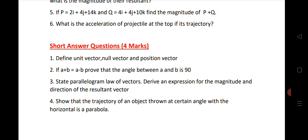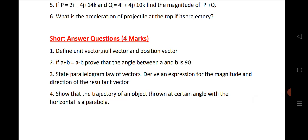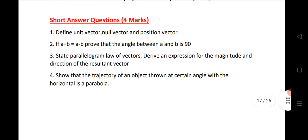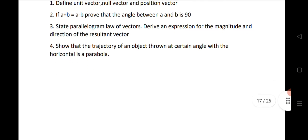Next, four SAQ questions: unit vector, null vector, position vector, and to find out a plus b and a minus b equals proved that the angle of a and b is 90 degrees straight parallelogram. Trajectory of a parabola - again very important question.